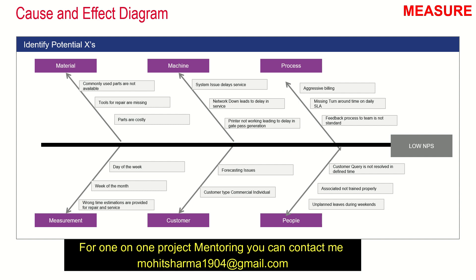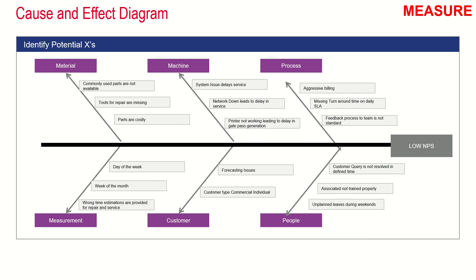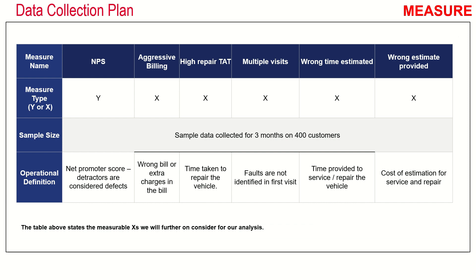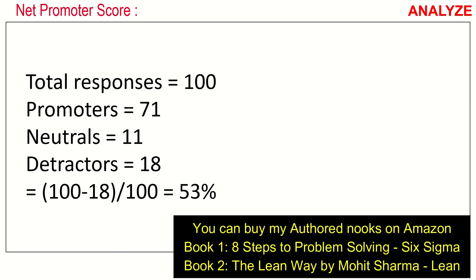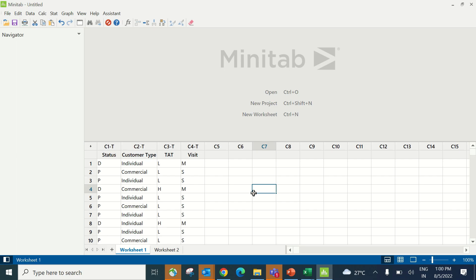Under Material: commonly used parts not available, tools for repair missing, and parts being costly. Under Measurement: wrong time estimations provided for repair and service. The week of the month could be an issue, as in the last week the team is busy with other activities and not delivering services. The day of the week could also be a reason for low NPS. The team then created a data collection plan and collected data for three months from 100 customers: 71 promoters, 11 neutrals, and 18 detractors — giving a baseline NPS score of 53%.